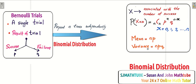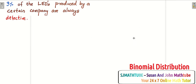It will be really nice if you take a sheet of paper and note all these things. So: Bernoulli trial, you repeat the Bernoulli trial n times, you end up with binomial distribution, and the formula generates the probability for x number of successes along with its mean and variance. Now, to understand this properly, we need one example. So let's try one example.